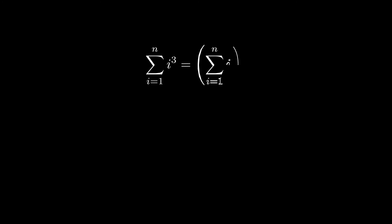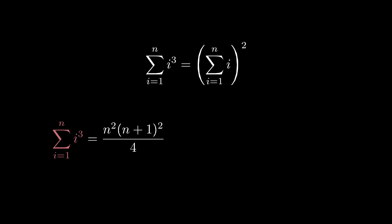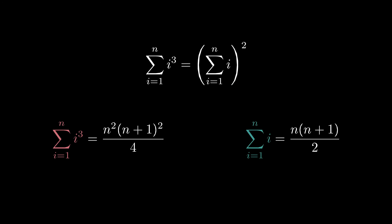We can also prove this fact using proof by induction. Proving this formula directly by induction is challenging, so we are going to go through an intermediate step. In particular, we can prove that the sum of the first n positive cubes is equal to n squared times (n plus 1) squared all divided by 4, and the sum of the first n positive integers is equal to n times (n plus 1) divided by 2.